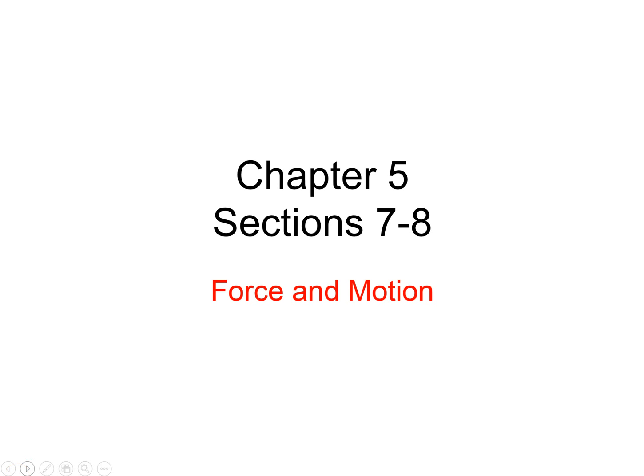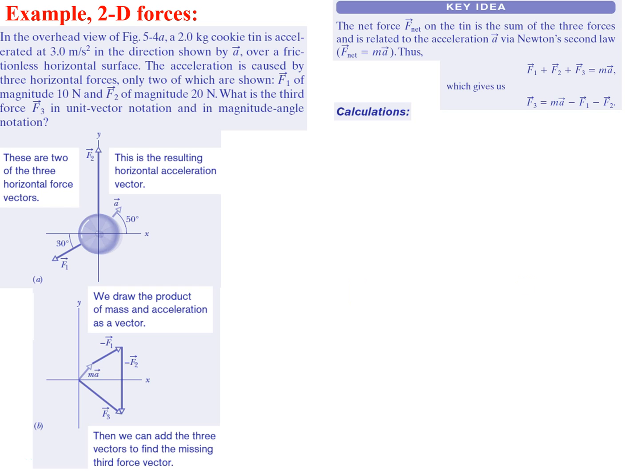We're going to continue on with Chapter 5, covering Sections 7 and 8 on Forces in Motion. Let's start off with an example. In the overhead view, a 2-kilogram cookie tin is accelerated at 3 meters per second squared in the direction shown by A. They're giving you this acceleration in that direction.